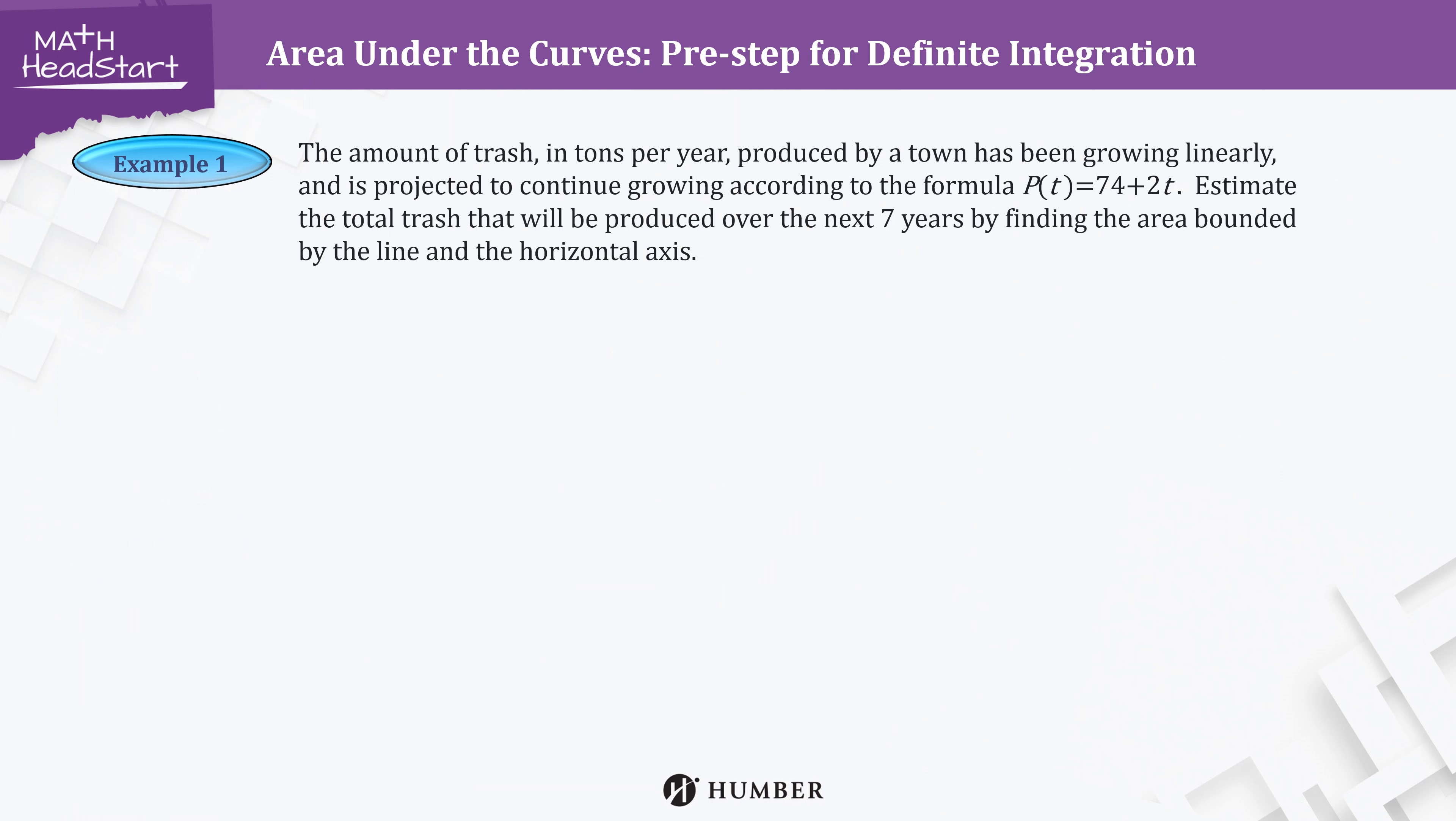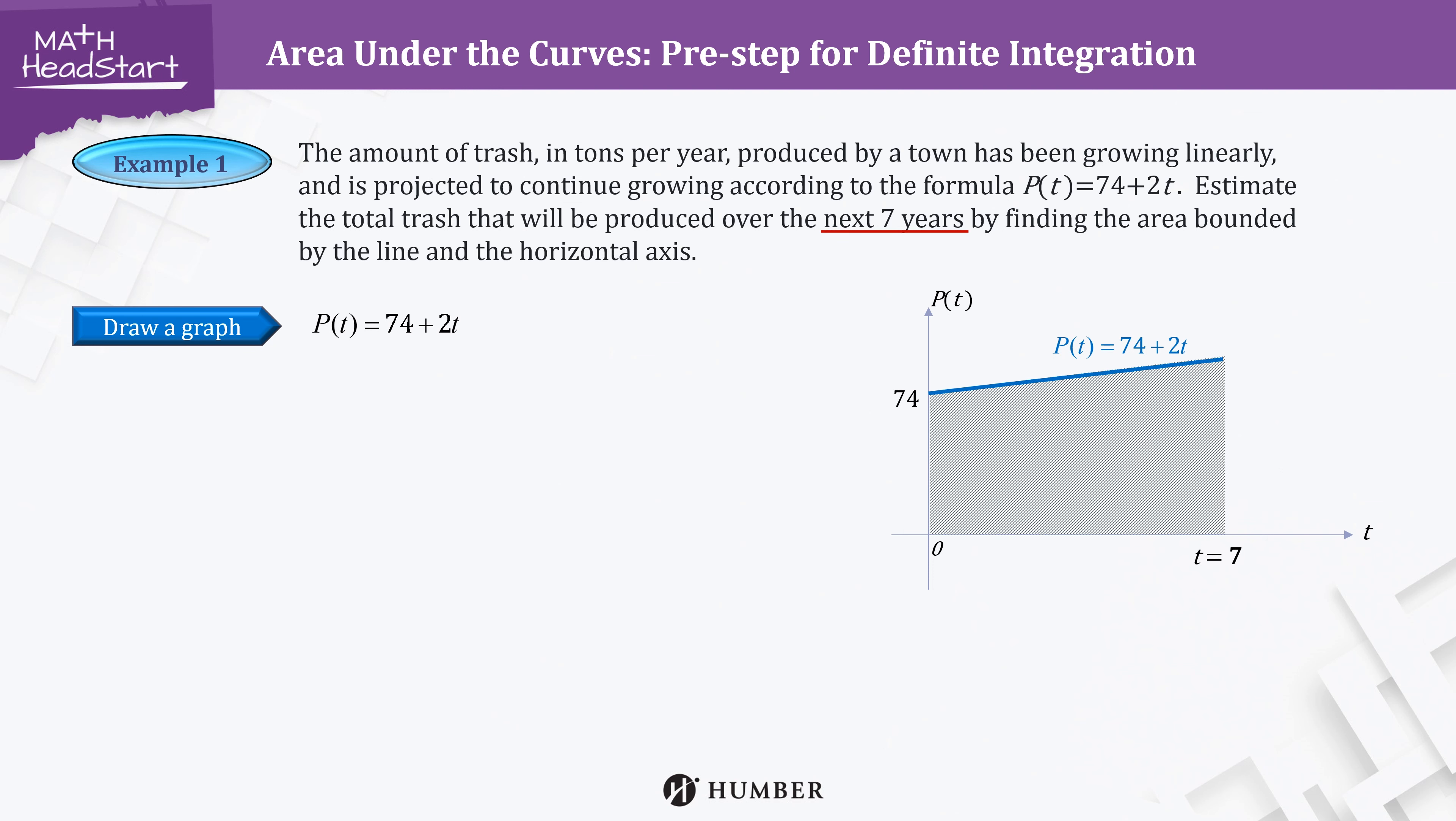We'll begin our topic with an example. Let's sketch a picture in the rectangular coordinate system according to the question. Draw a graph of the function given P(t) = 74 + 2t. As the y-intercept 74 and the slope 2 as shown, since we need to find the total trash amount for the next 7 years, let's share the region under the line up to t = 7.